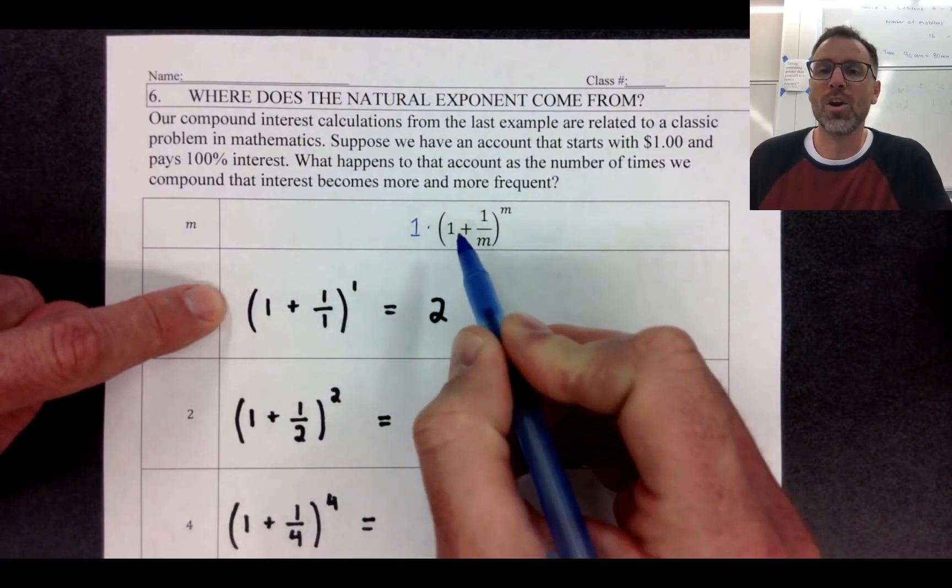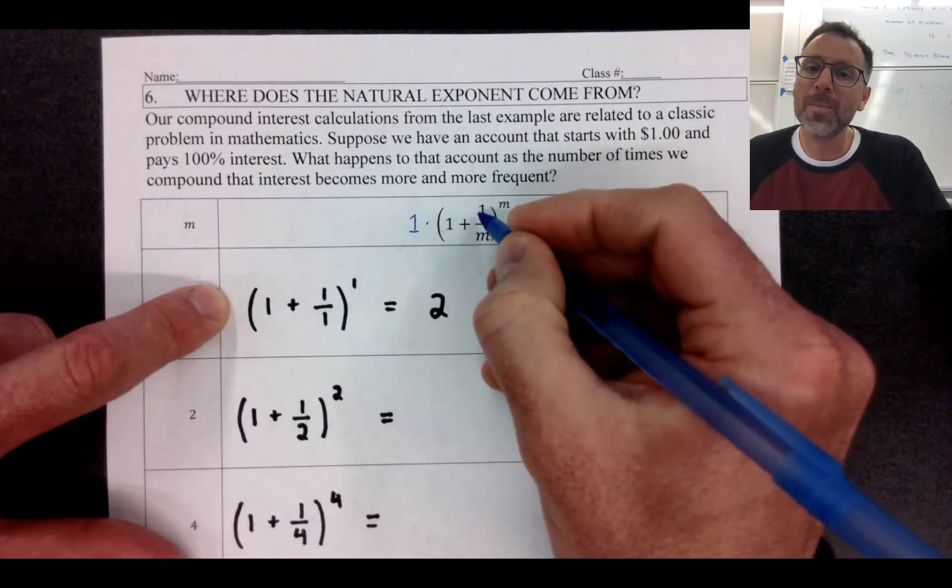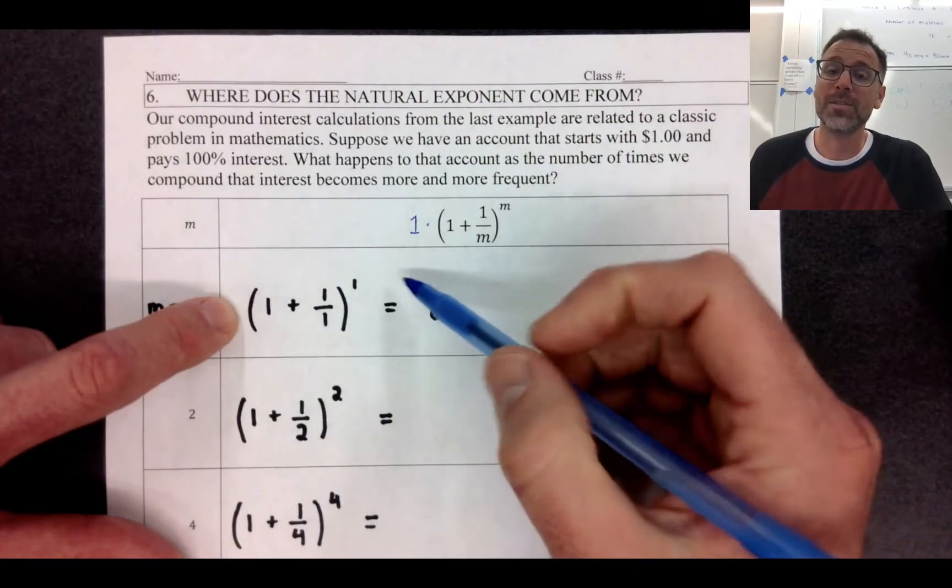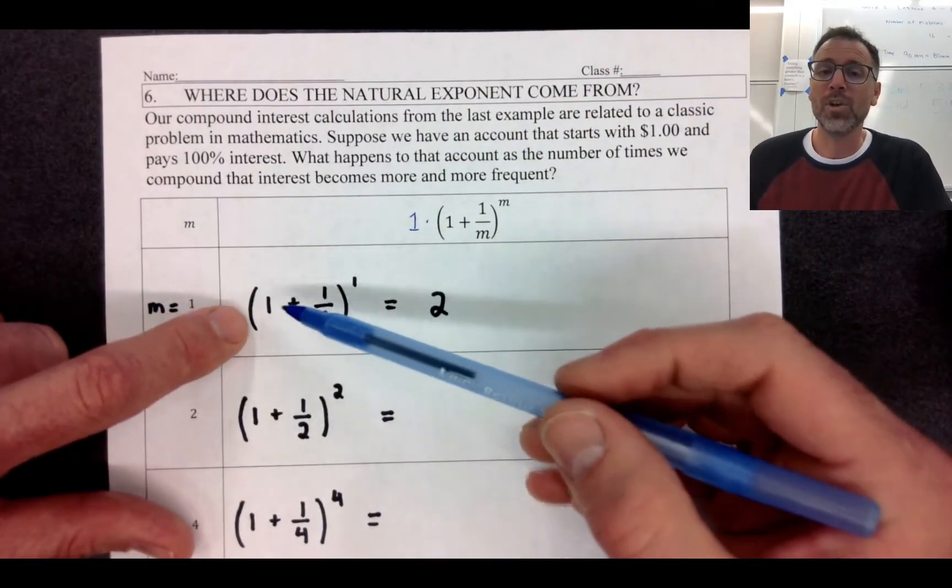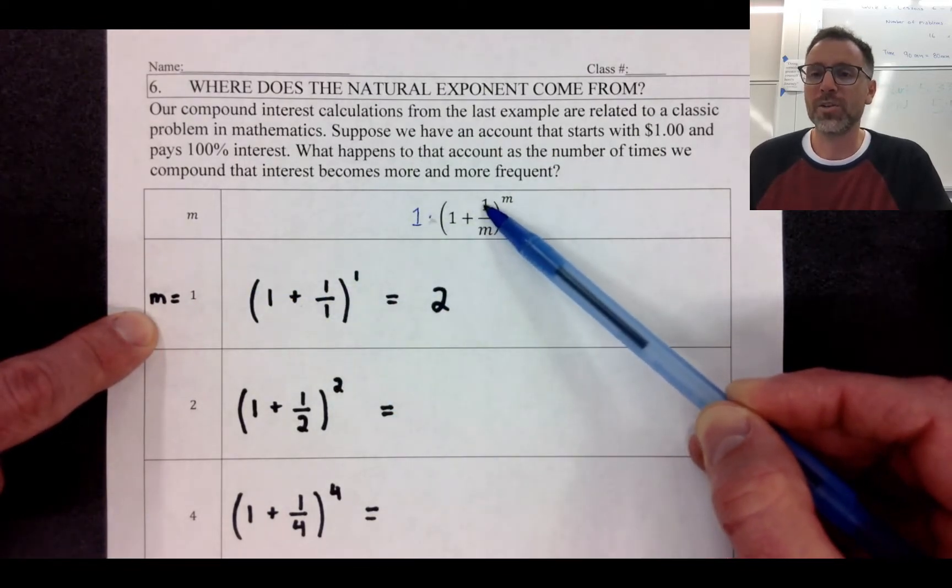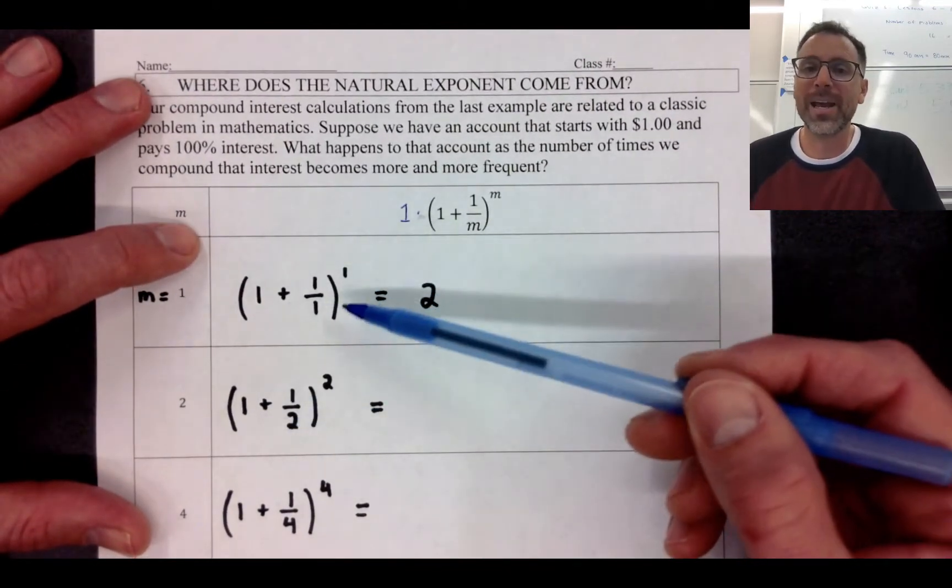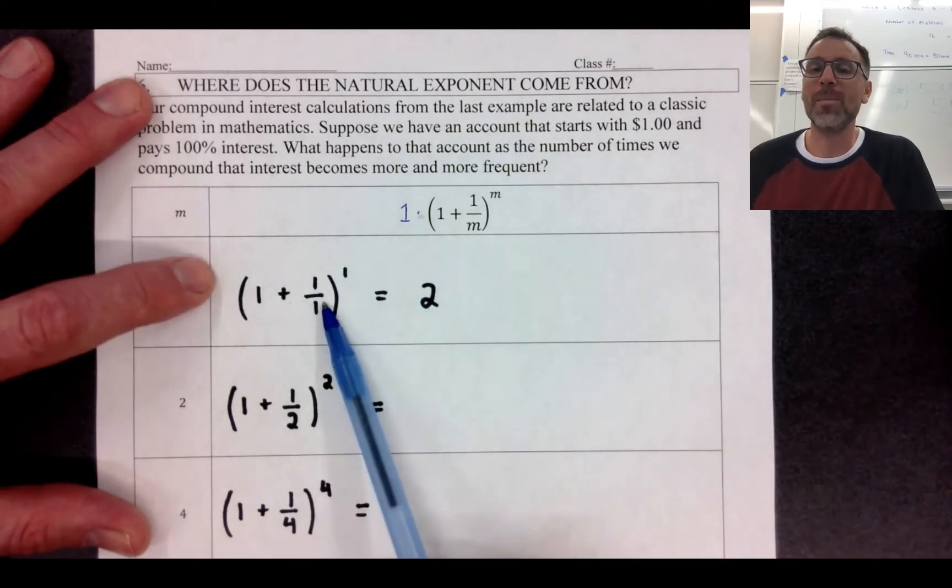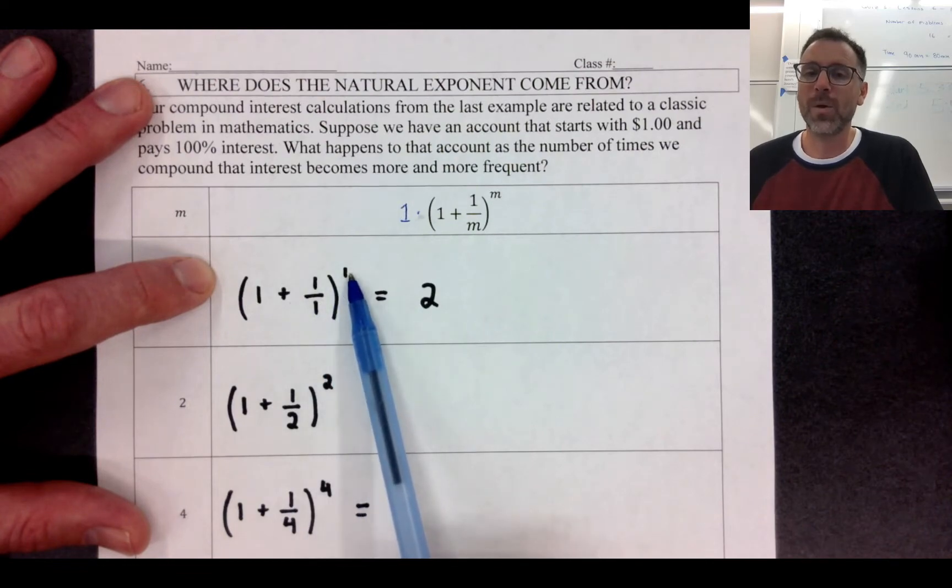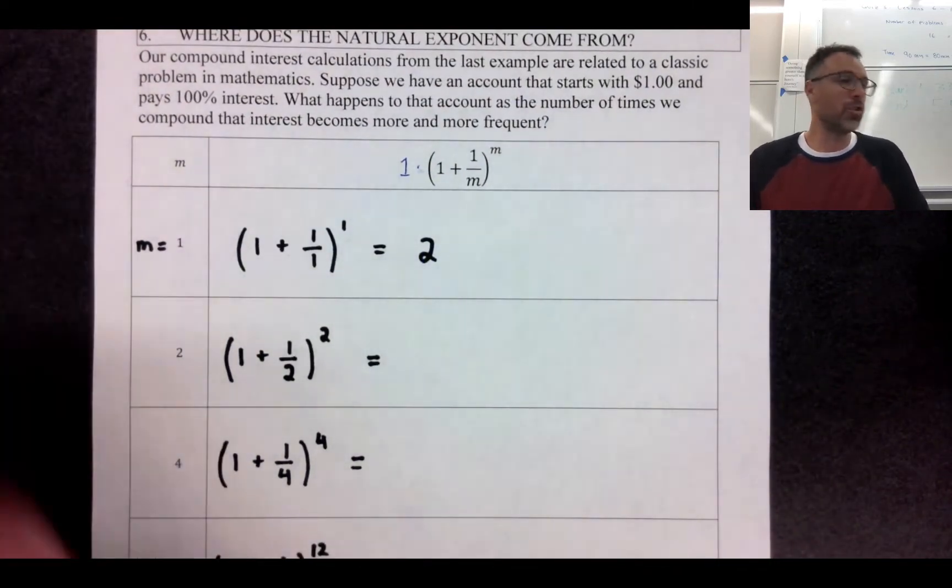So the original principle on our loan is one dollar. And then we have this one plus an interest rate raised to the number of times that we compound. In this situation we're going to say that the number of times we compound will divide the interest rate by that number and then we'll actually take that number of compounding periods. If I start with a dollar in the bank and I want to know how much I have at the end of the year under the assumption that I'm paid 100% interest, I don't know what bank is offering 100% interest but whatever it is I want to be there.